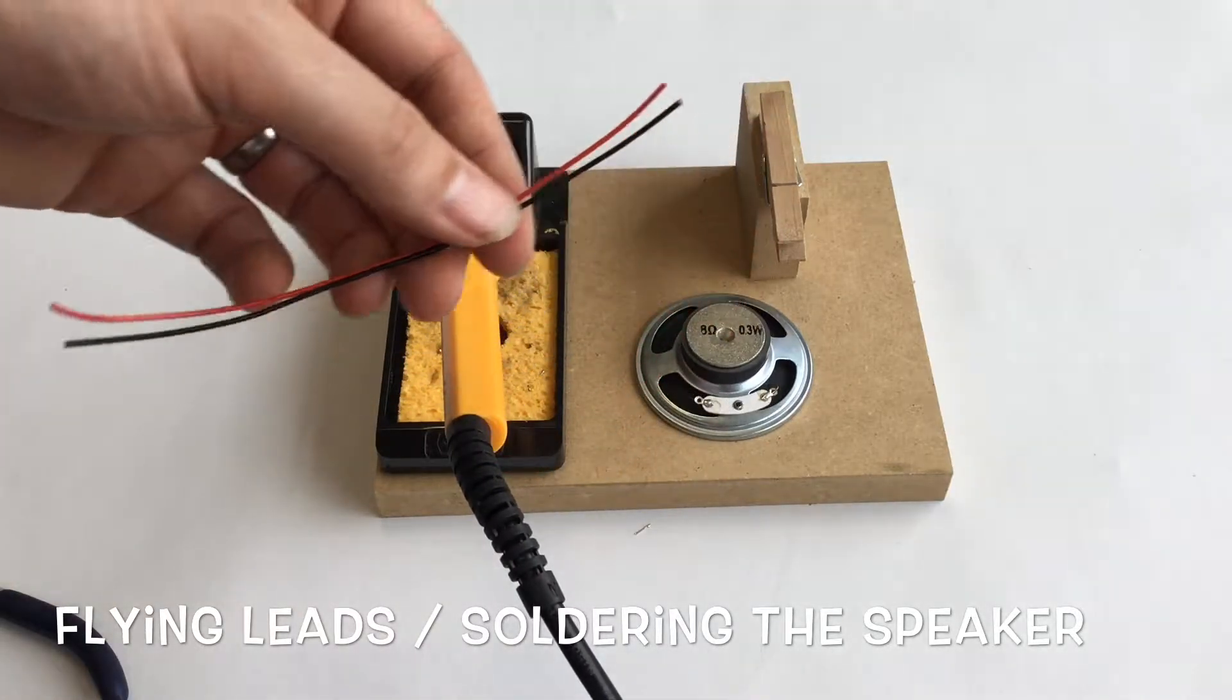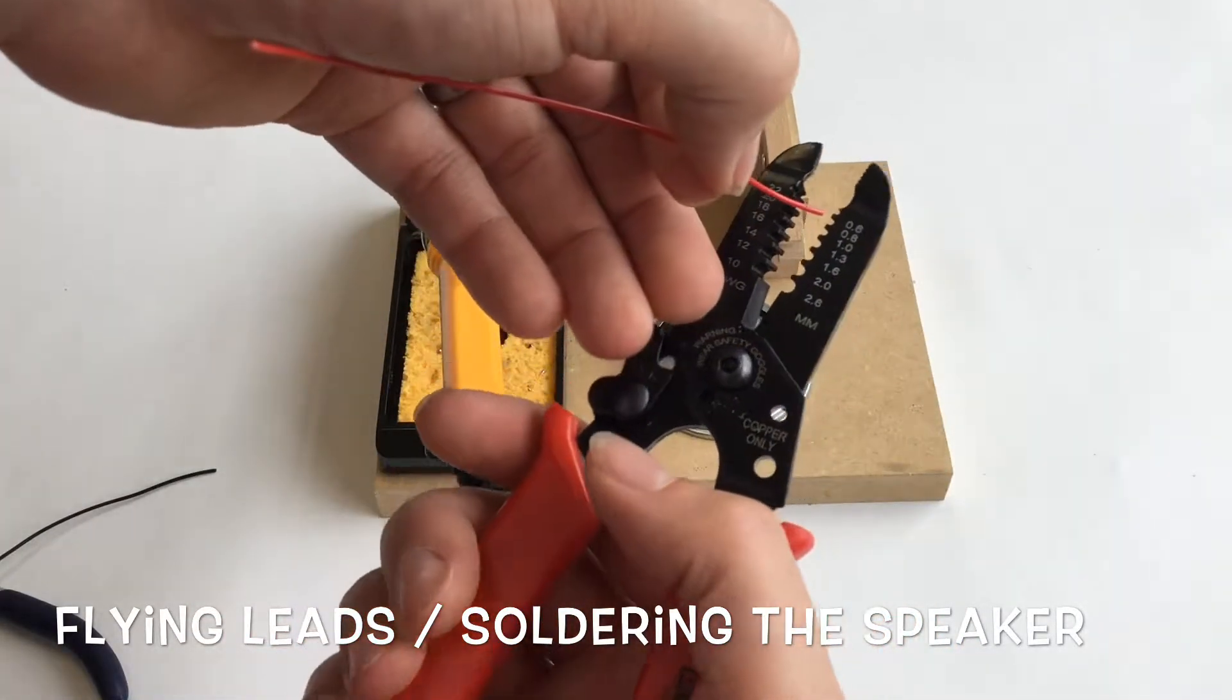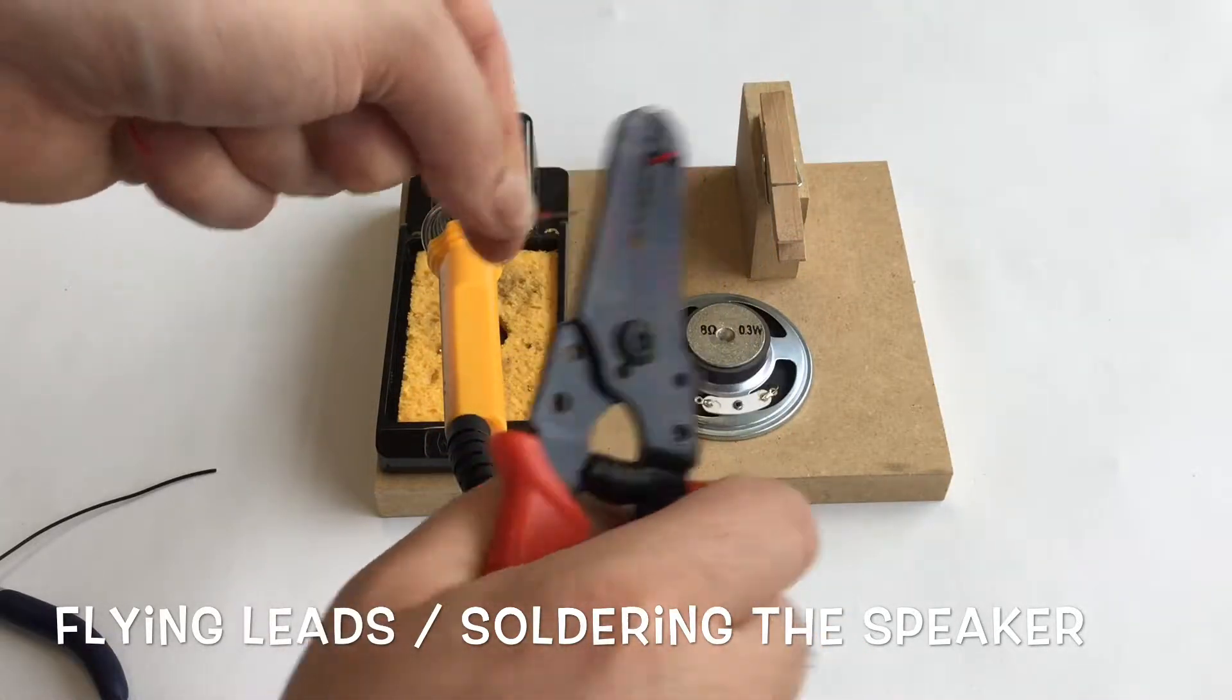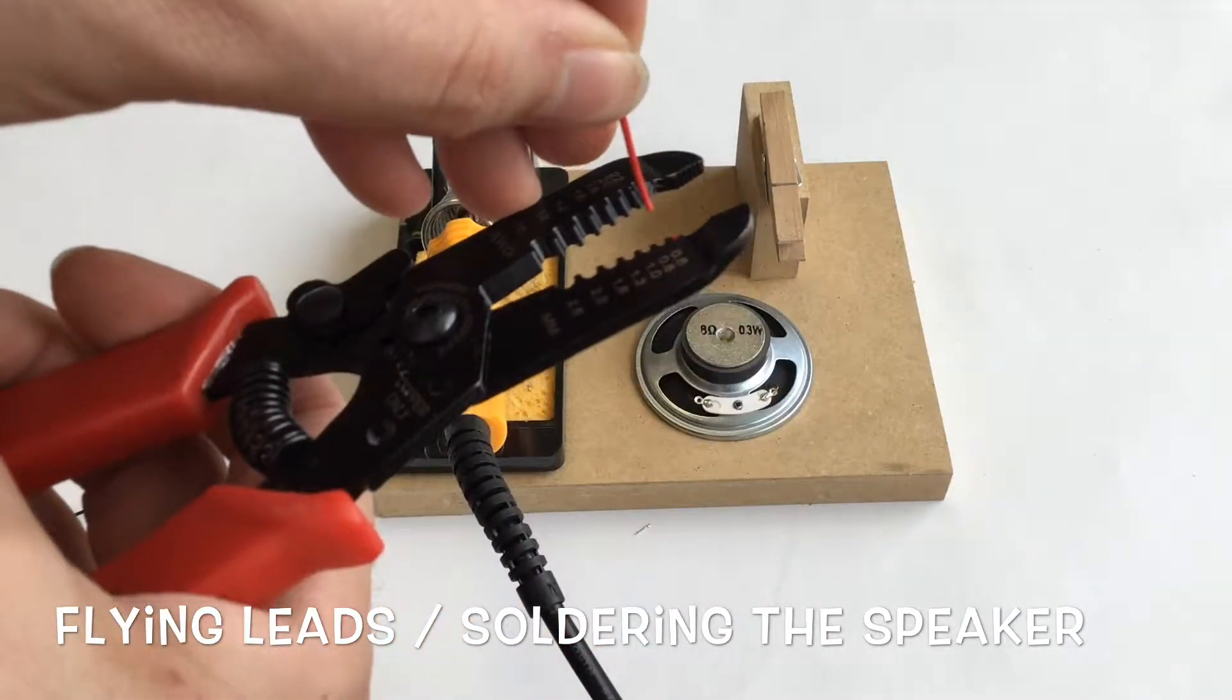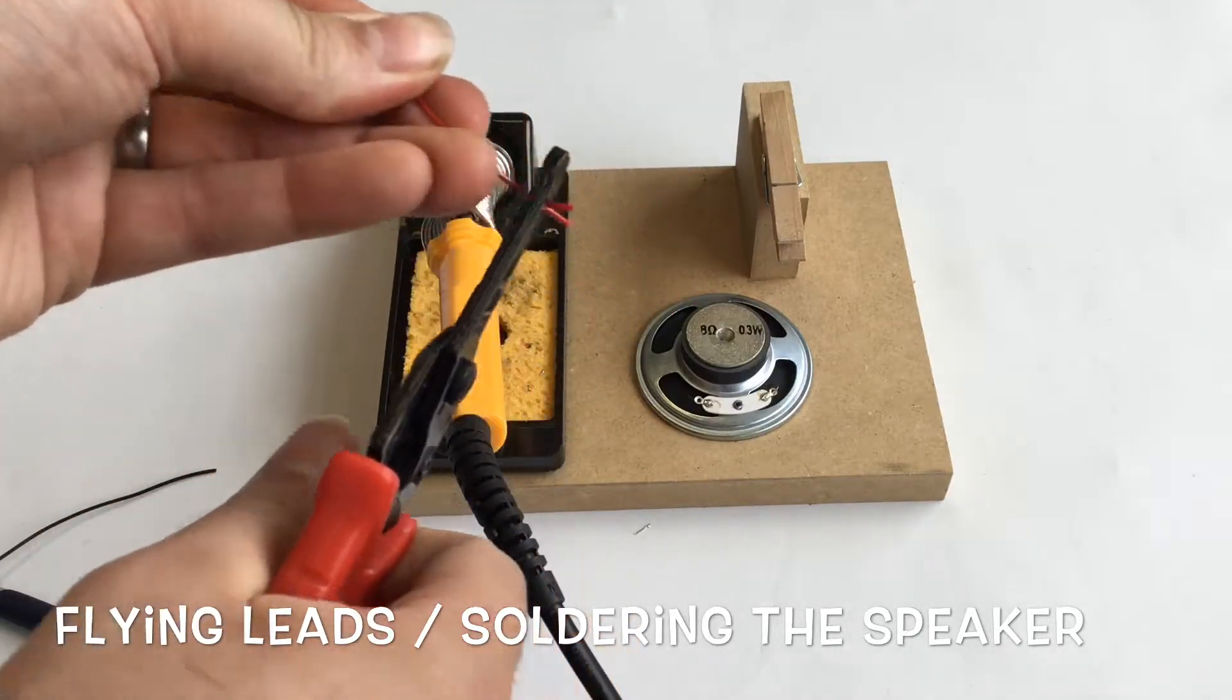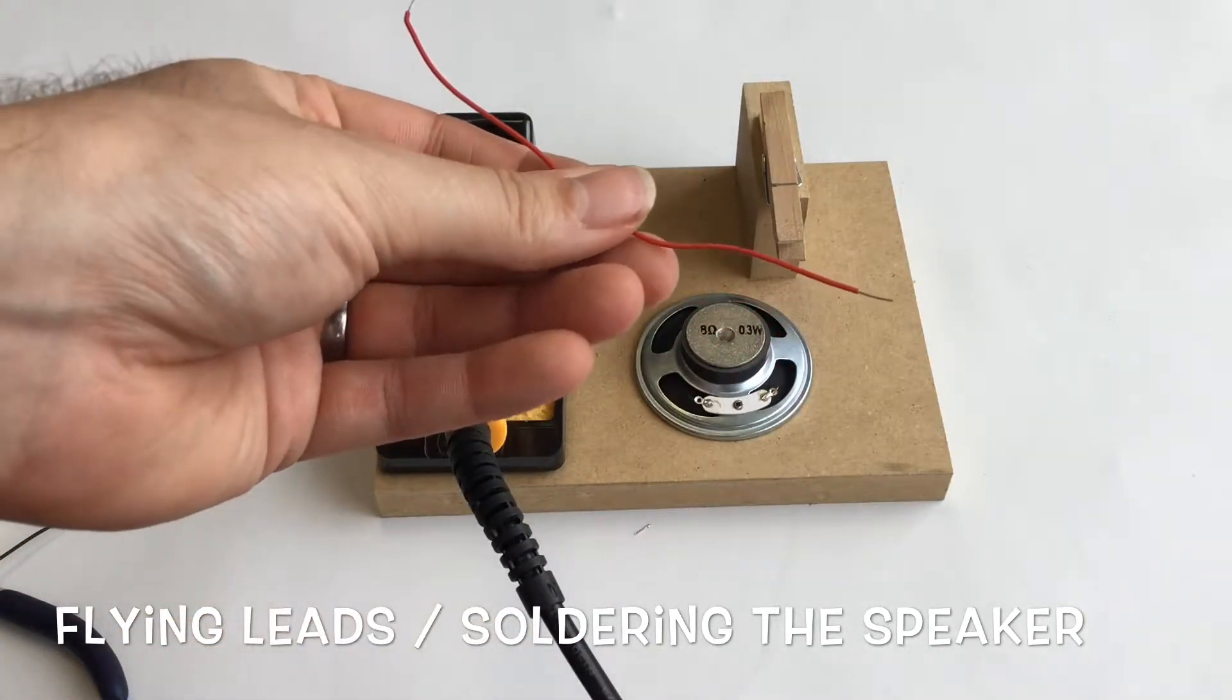Each end will need stripping with wire strippers. On these ones, it is best to use the 0.6 hole at the top. Close it and pull the wire through. So again, 0.6, close it, pull the wire through. That then leaves about a centimeter stripped at the end.